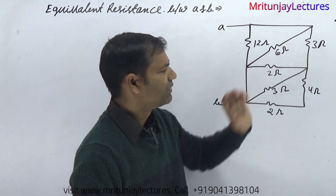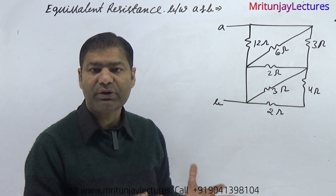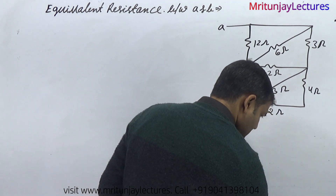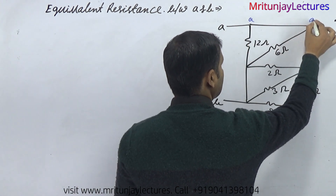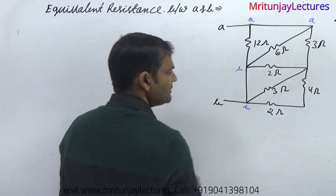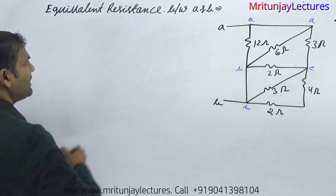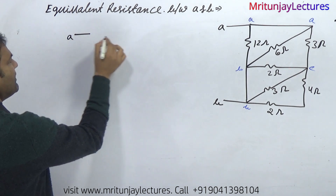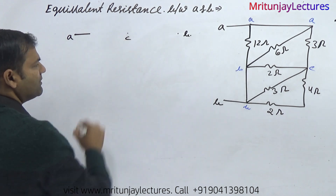Both that point and that point are at the same potential. Another way, you can redraw the circuit. If you feel any confusion, redraw the circuit. That point is A, that point is B, and suppose that point is C. If you redraw the circuit, here is A, here is B, and here is C.